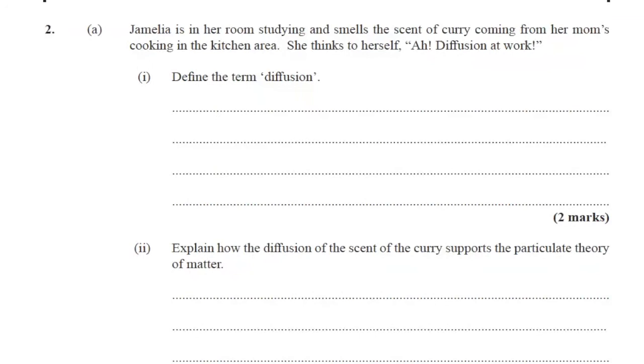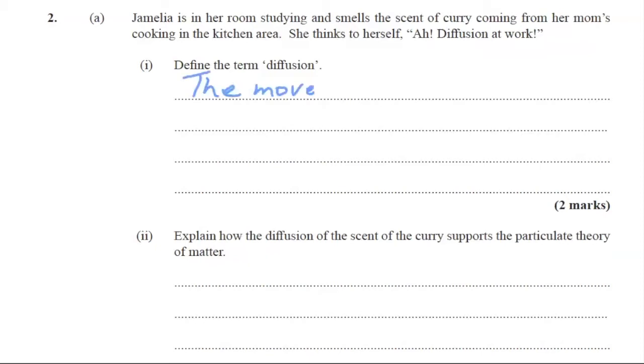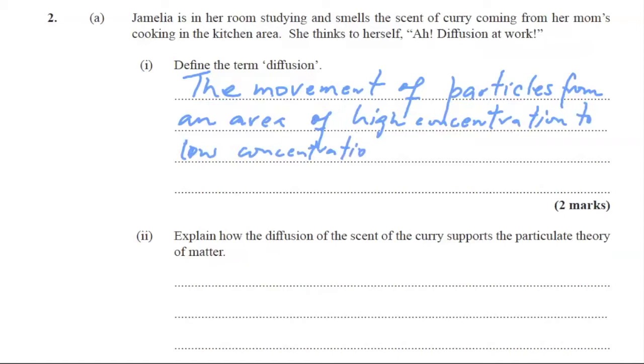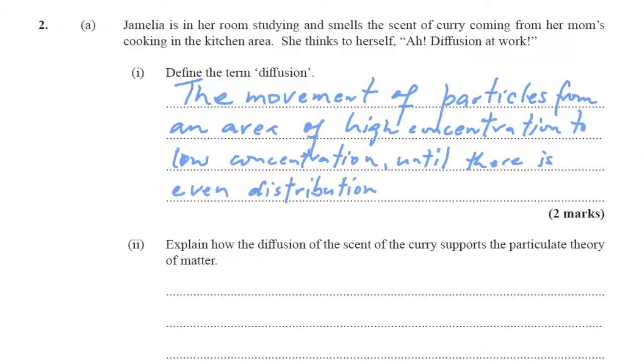Part A. Jamelia is in her room studying and smells a scent of curry coming from her mom's cooking in the kitchen area. She thinks to herself, ah, diffusion at work. Define the term diffusion. So diffusion is the movement of particles from an area of high concentration to low concentration until there is even distribution. Probably would have seen this before. Or we could say movement of particles from where there are many to where there are few until there is even distribution. We'll stick to what we just wrote.